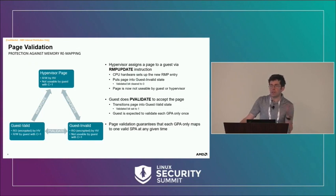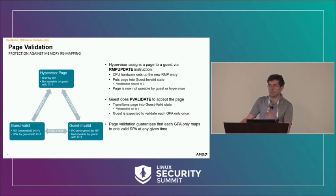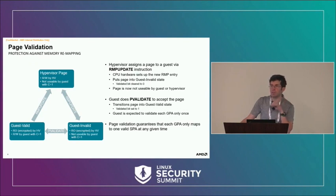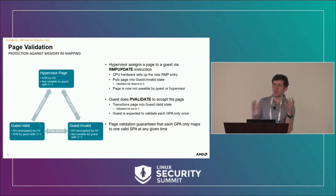This two-step page validation sequence is very important for security. It ensures there is only one GPA-to-SPA translation valid at any given time for that GPA. It's critical that the guest OS does not execute P-validate multiple times on the same GPA, because that could create multiple GPA-to-SPA mappings that a malicious hypervisor could switch between at will. So the guest must track which pages it has validated and never double-validate a page.